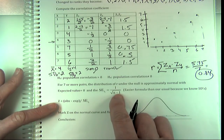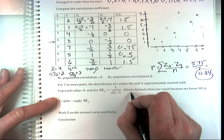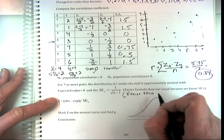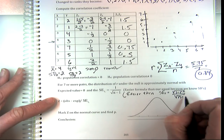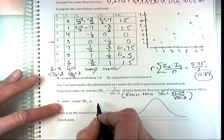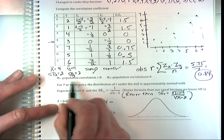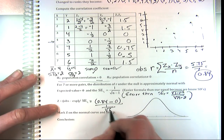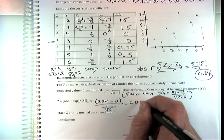So we have our usual Z statistic, but with a simpler standard error because we know the standard deviations. The standard error is 1 over the square root of (n−2). This is easier than before when we used the standard error of R = sqrt(1 − R²) / sqrt(n − 2). Our observed R_s = 0.84, expected under the null is 0, divided by 1/sqrt(6). Our Z statistic turns out to be about 2.05.